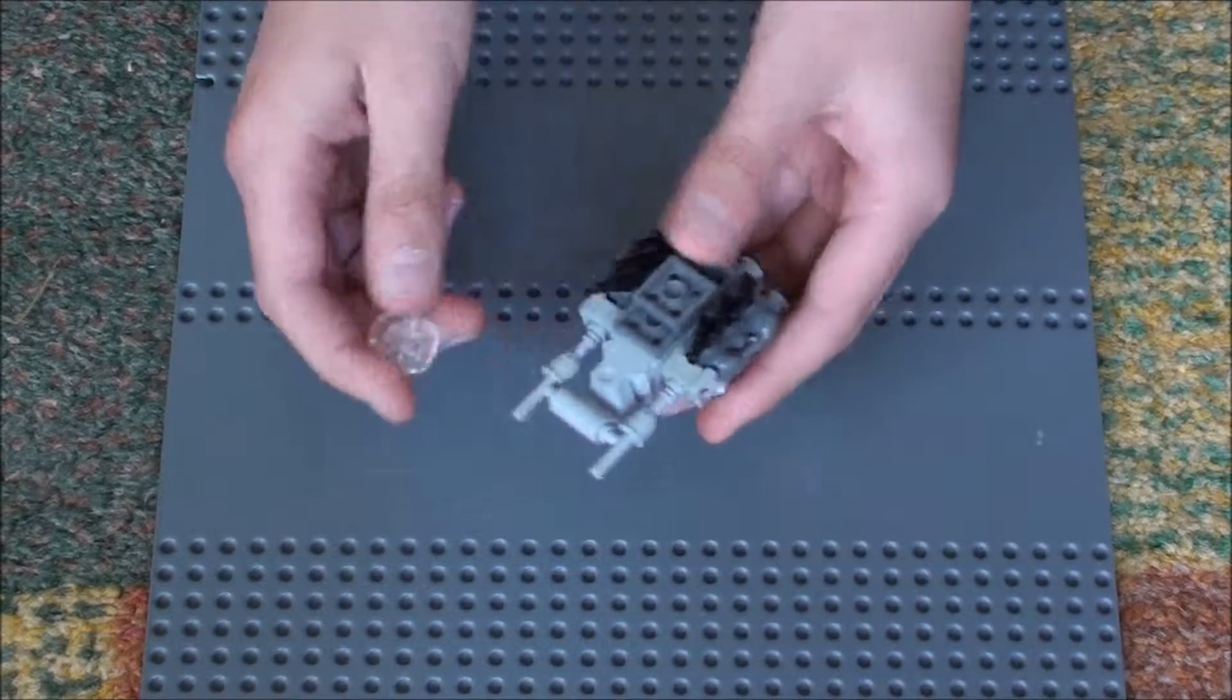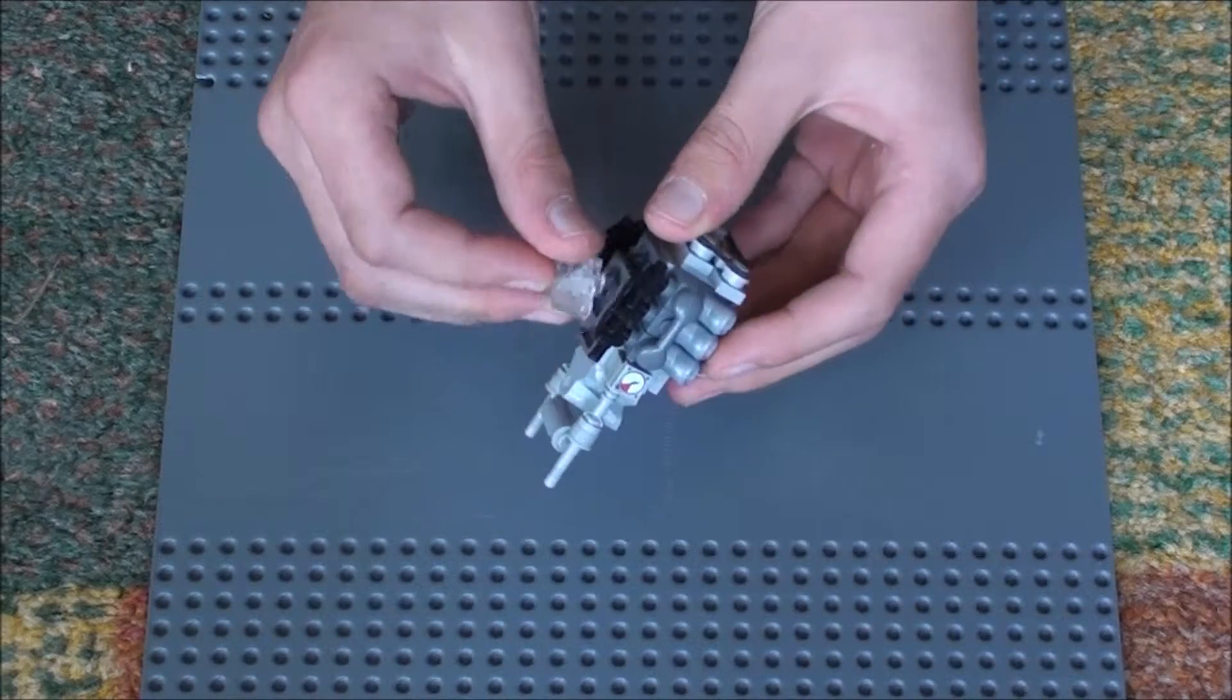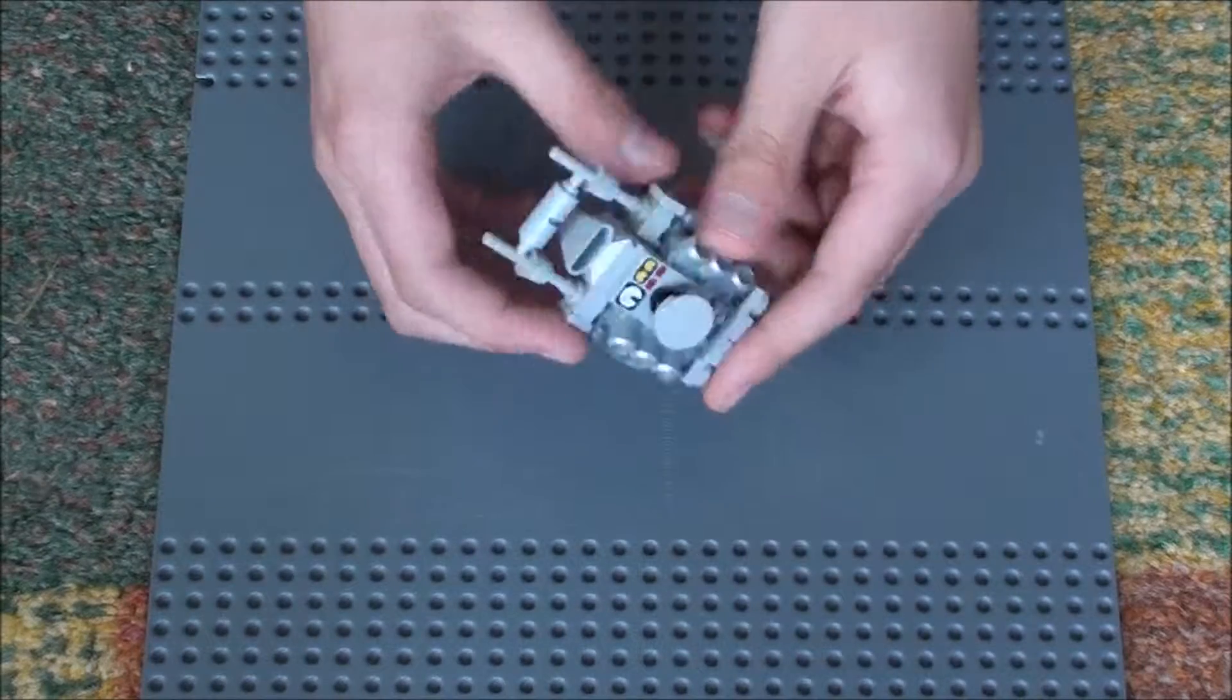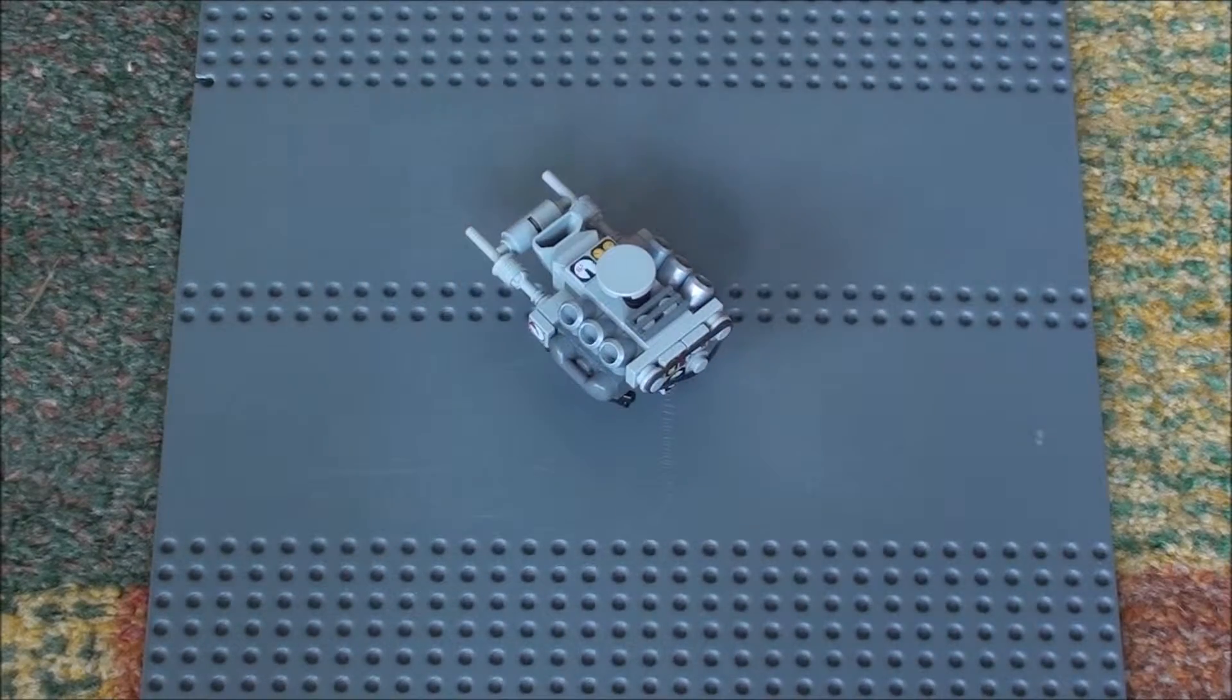And then you get the cylinder piece and put it on the 2x2 plate. And you've finished your V6 engine. Thanks for watching.